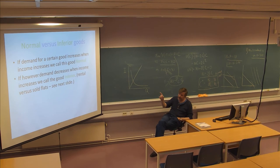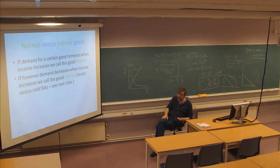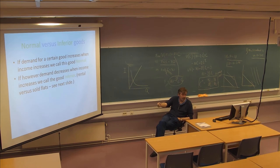Rental versus sold flats could be an example. Rental flats, at least in Norway, are something that people really don't like to do, but they have to live somewhere. They would really like to buy their own. So if your income is relatively low, you're not able to buy a flat, so you have to rent. But if these people get more money, they would immediately jump into the buying market. Then the demand for the rented flat would go down. So increase in income leads to reduction in demand in that case - the rented flat is a good example.